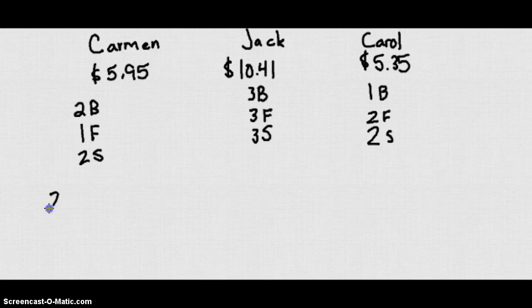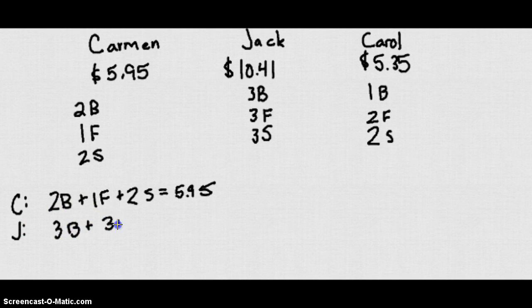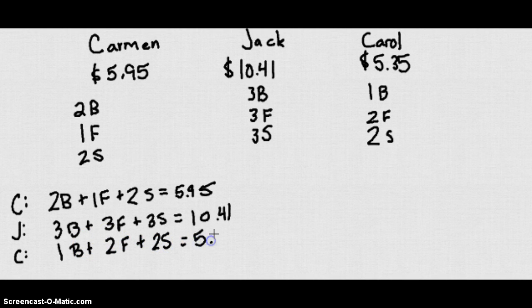So, we know that Carmen's two burgers, one fry, and two sodas totaled at $5.95. We know that Jack has three burgers, three fries, and three sodas totaled at $10.41. We know that Carol, her one burger, two fries, and two sodas totaled to $5.35.